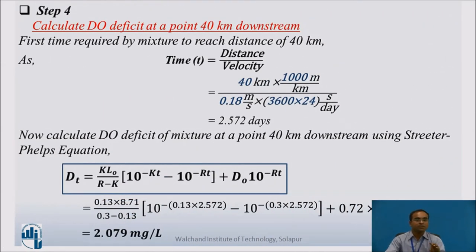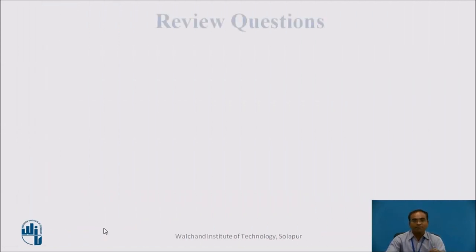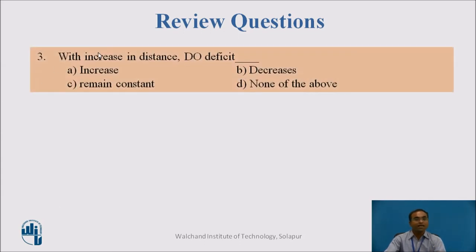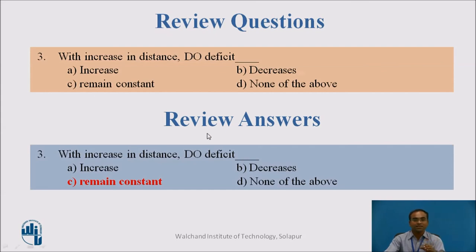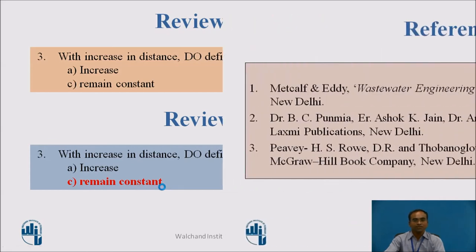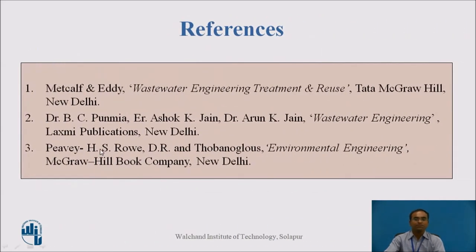Analyzing the results: with an increase in distance, does the DO deficit increase, decrease, remain constant, or none of the above? Comparing the values from steps 3 and 4, the DO deficit is not changing significantly — it is remaining approximately constant. Therefore, the answer is C: the DO deficit remains constant. These are the references used. Thank you.